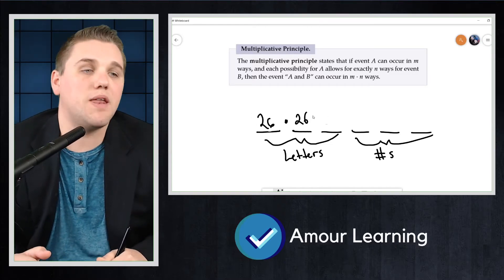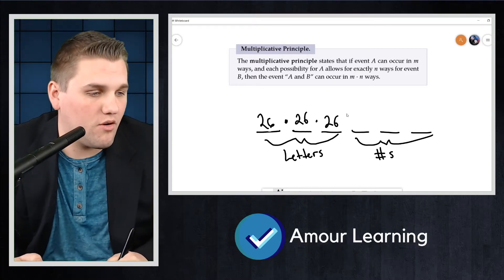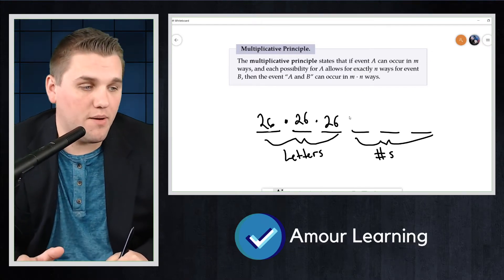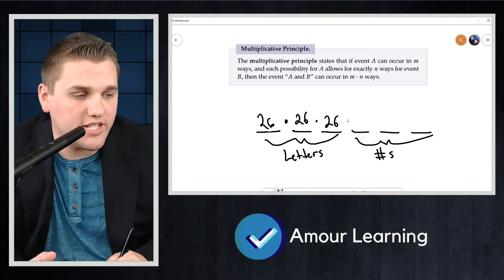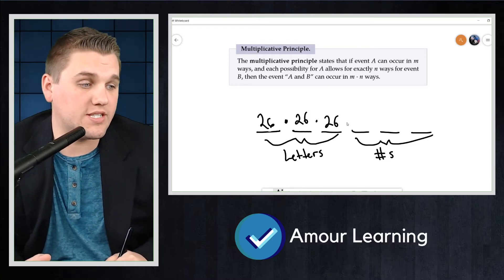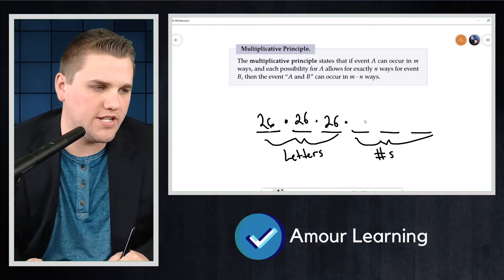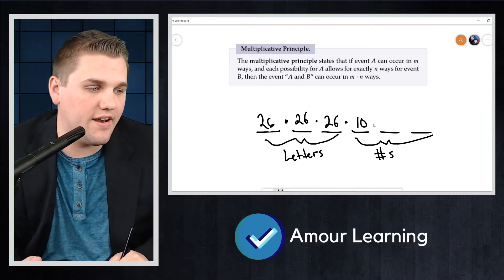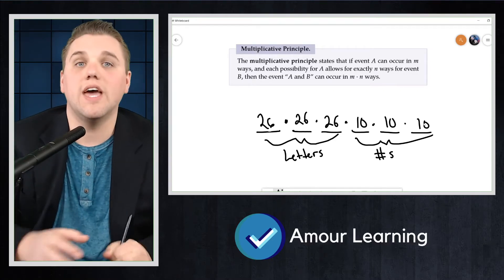And so if we want to figure out how many events we can have here, or how many different outcomes there are with these six events, we do 26 times 26 times 26 times, how many choices do we have for this fourth event here? Well there are only 10.